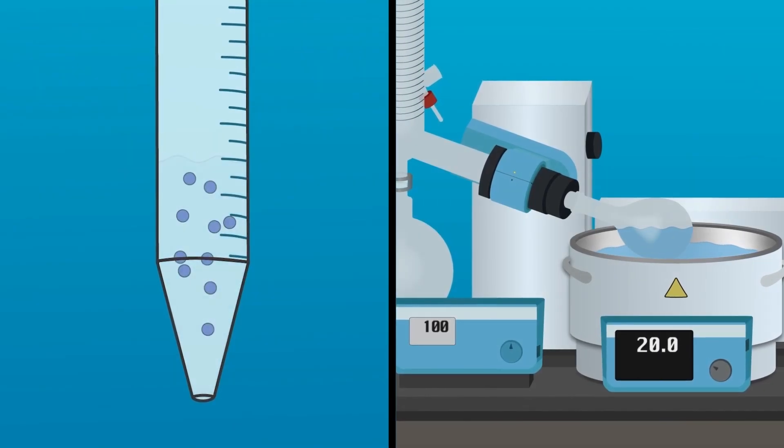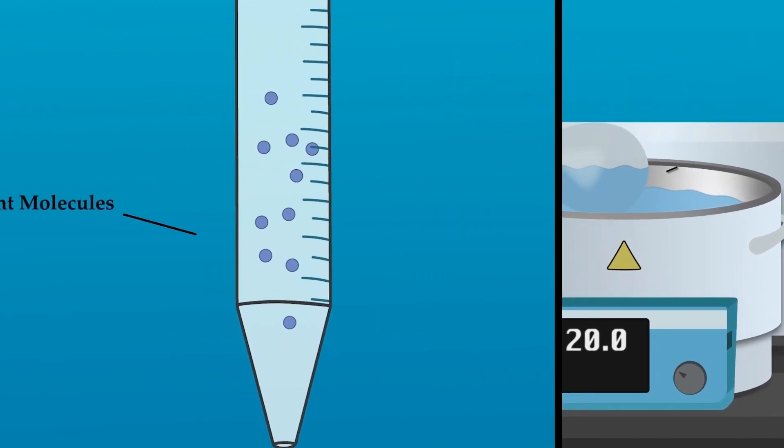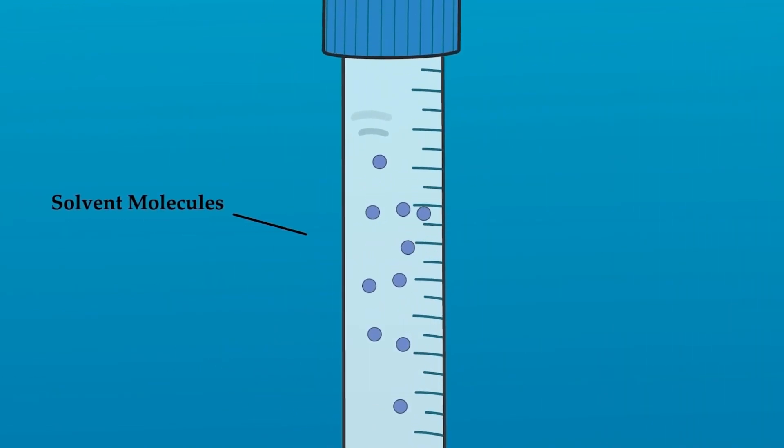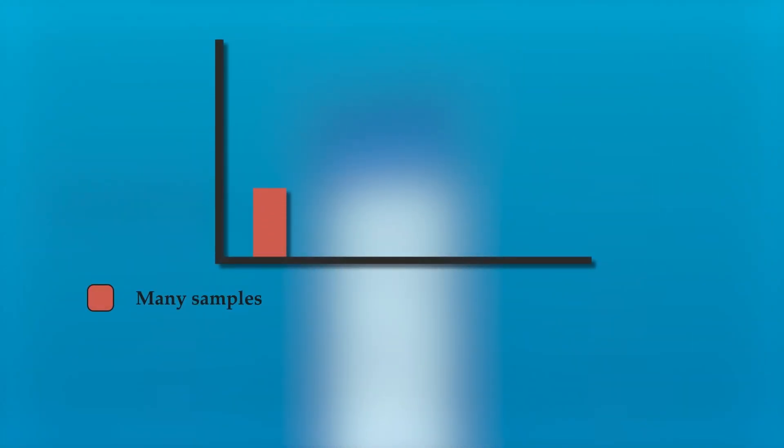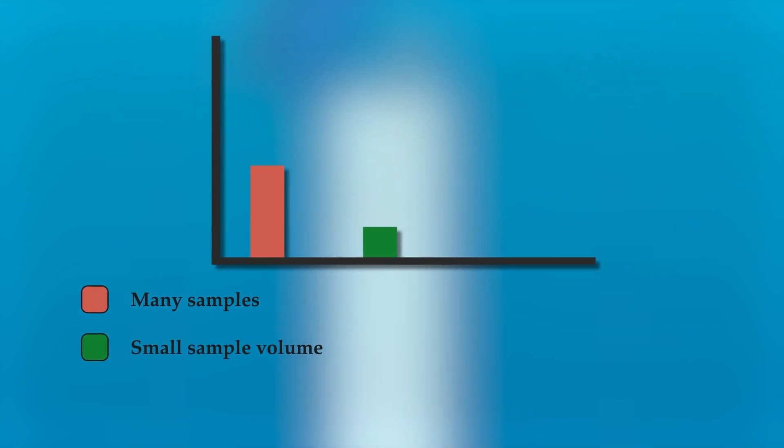So when are each of these methods recommended for use? Nitrogen blowdown is ideal when evaporating a high number of samples. Some nitrogen evaporators can accommodate batches of up to 100 samples. This method is also meant for small volume samples. Samples larger than 100 milliliters will have a prolonged evaporation time.